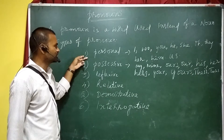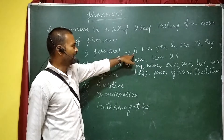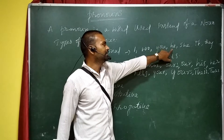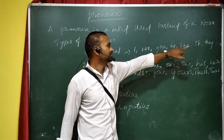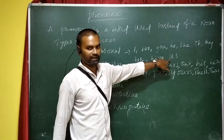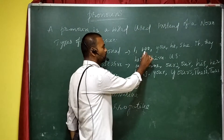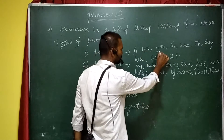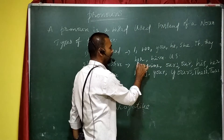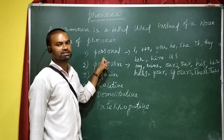So first, we have discussed personal pronouns. Personal pronouns are: I, we, you, he, she, it, they, her, him, us. These are the personal pronouns.